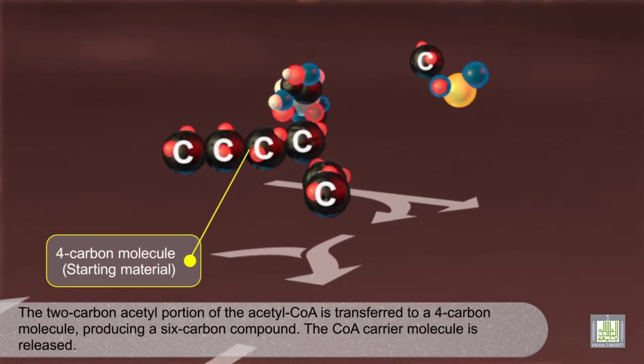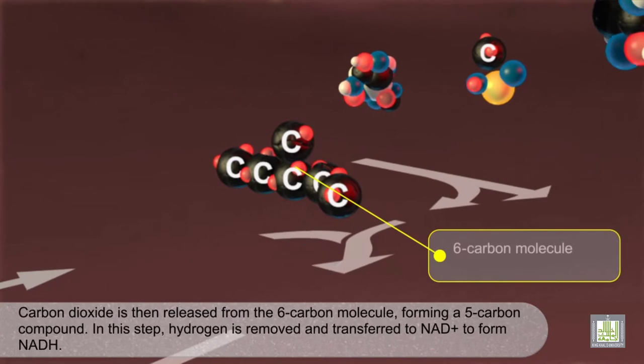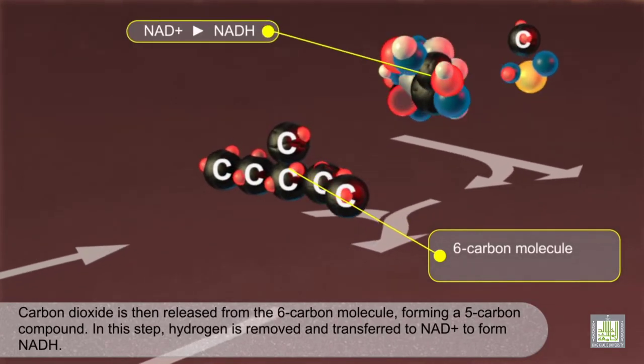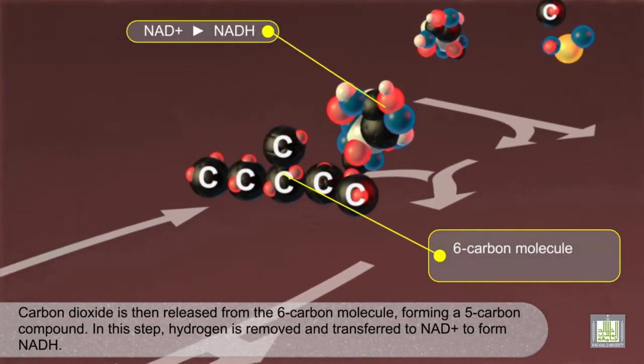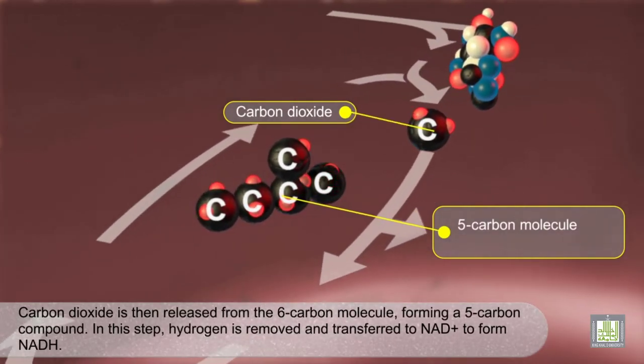Carbon dioxide is then released from the six-carbon molecule, forming a five-carbon compound. In this step, hydrogen is removed and transferred to NAD plus to form NADH.